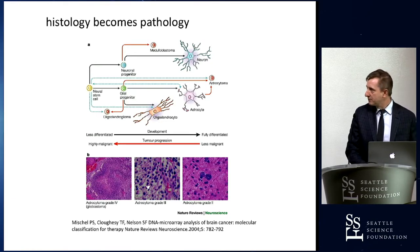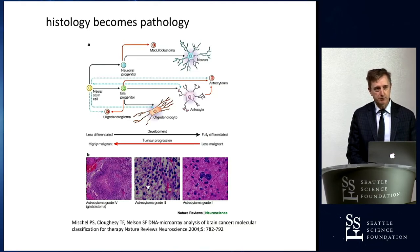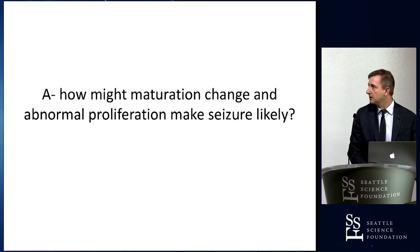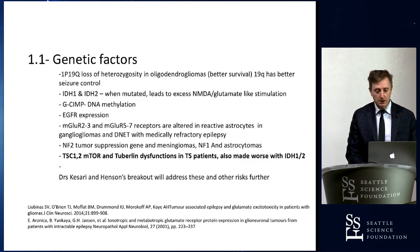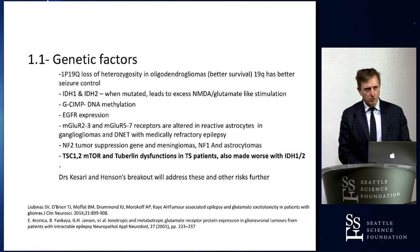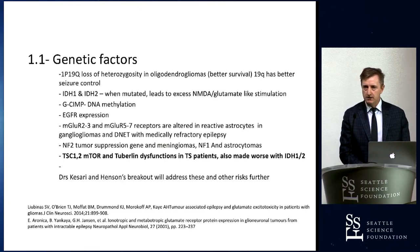In brain tumors, histology becomes pathology, and there's a maturational change that drives proliferation depending on the time of change. The question for us in epilepsy is twofold: how does the maturation change and the proliferation change make seizure more likely? Later you'll hear from Dr. Kassari and Henson on genetic factors, which is where I wanted to kick off — as we get more involved in genetic screening, we're learning more about epilepsy patients' genetic risks and brain tumor patients' genetic risk for progression.